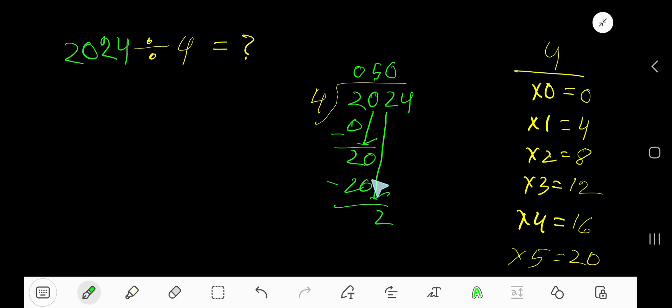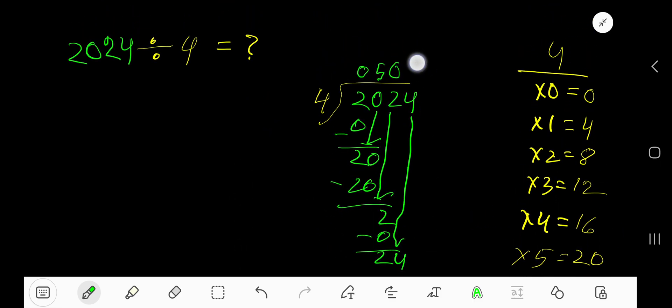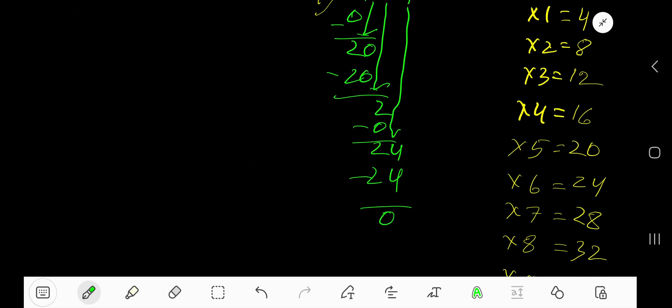4 goes into 2 zero times, as 2 is less than 4. 0 times 4 is 0. Subtract and bring down this 4 to make 24. 4 goes into 24 how many times? 6 times. Write 6 here. 6 times 4 is 24. Subtract to get 0.